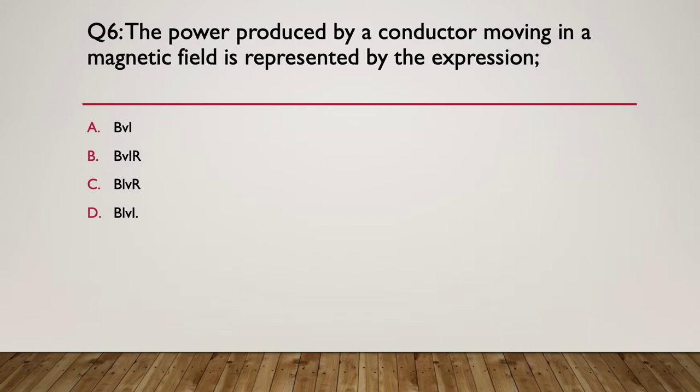Question six. The power produced by a conductor moving in a magnetic field is represented by which of these expressions? A: B multiplied by V multiplied by L; B: B multiplied by V multiplied by L multiplied by R; C: B multiplied by V multiplied by R; or D: B multiplied by L multiplied by I (current). Pause here.